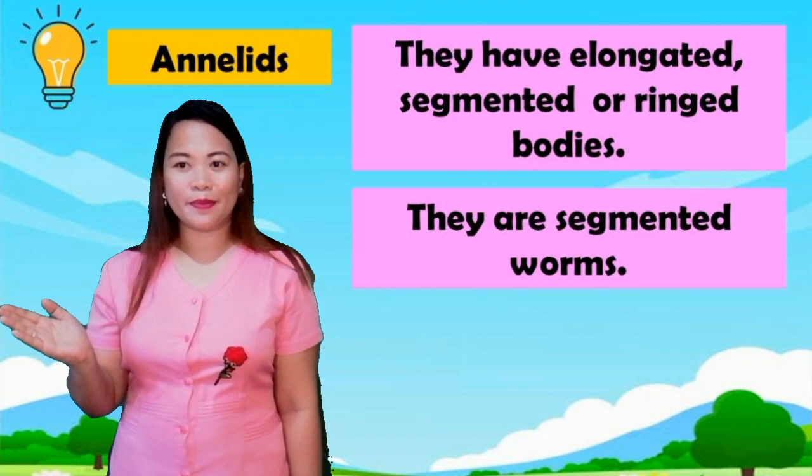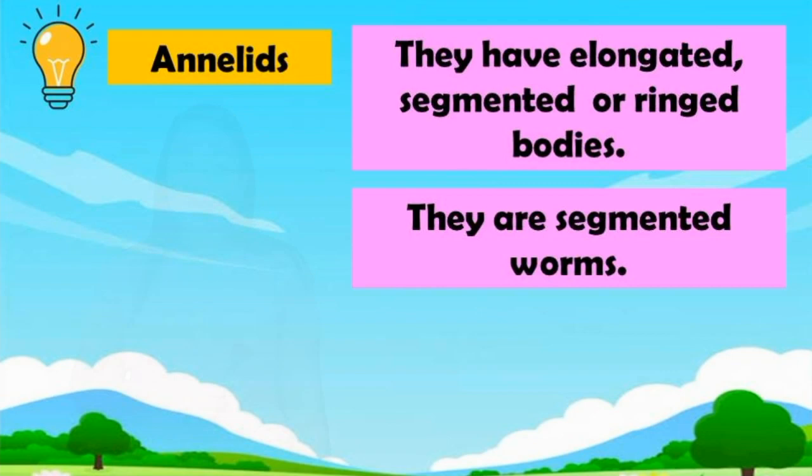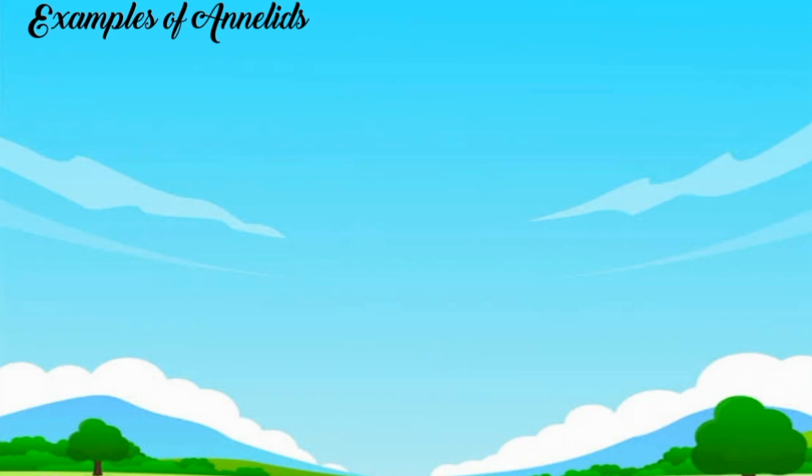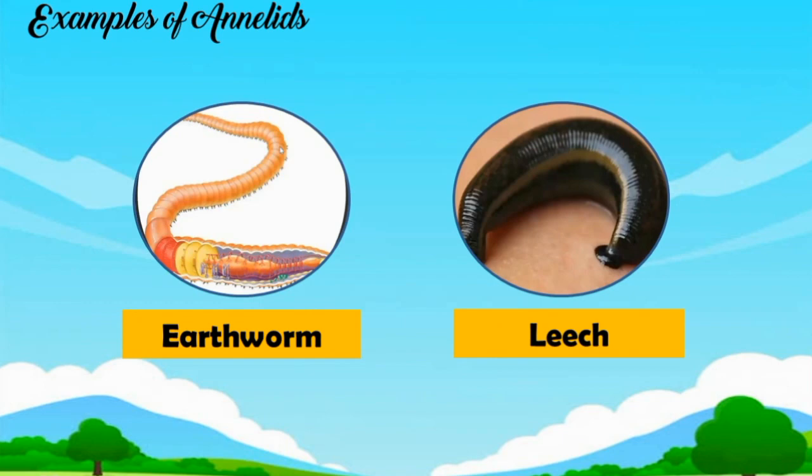Annelids have elongated, segmented, or ringed bodies. They are segmented worms. Examples of annelids: earthworm, leech.